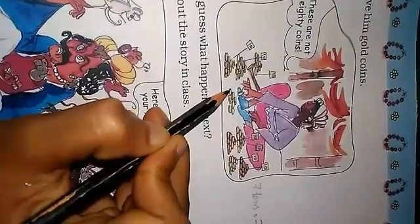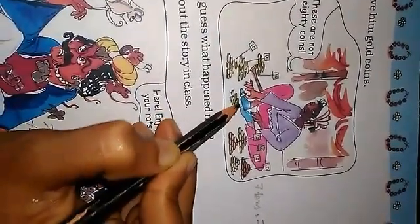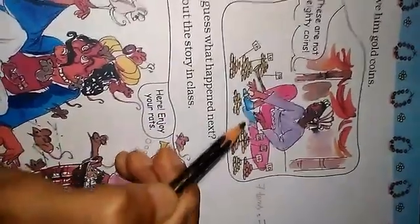10 groups means 70 gold coins. And here you see 1, 2, 3, 4, 5, 6, 7, 8 — 8 gold coins. So that means 78 gold coins total.